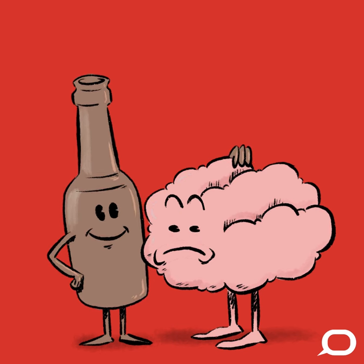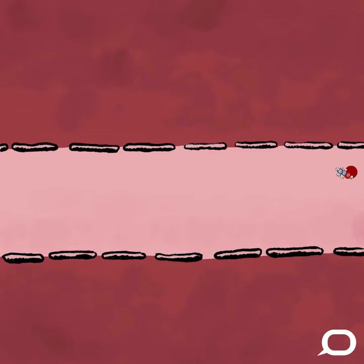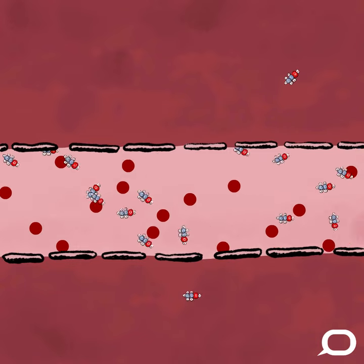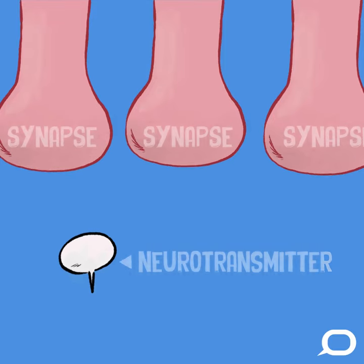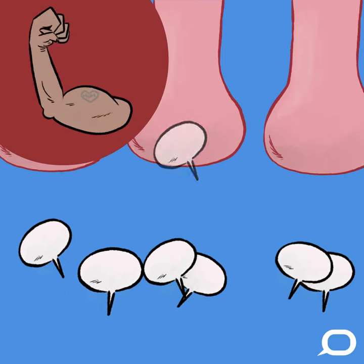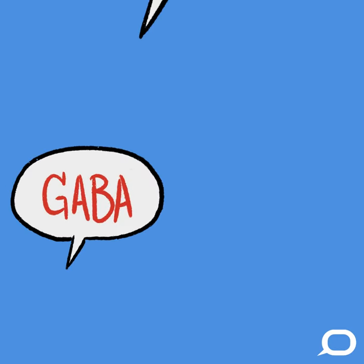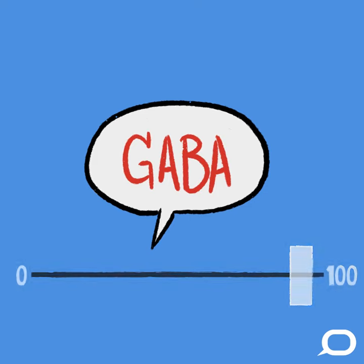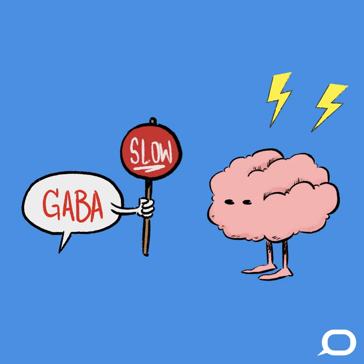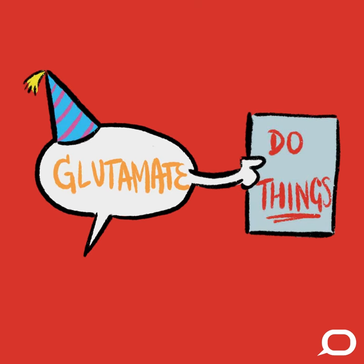Ethanol acts as a depressant within the brain, meaning that it slows down the function of nerve cells. It does this by messing with the brain's neurotransmitters, which it can do because ethanol is such a small molecule that it can pass through the tight capillaries in the brain known as the blood-brain barrier. Neurotransmitters are chemical messengers used by our nervous system to communicate with nerve cells and muscles. Alcohol mainly affects three: GABA, glutamate, and dopamine. Ethanol increases the effects of GABA, which is an inhibitory neurotransmitter, meaning it decreases electrical activity in the brain, slowing it down.